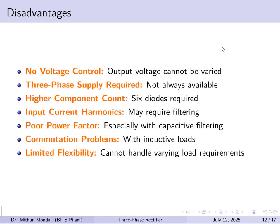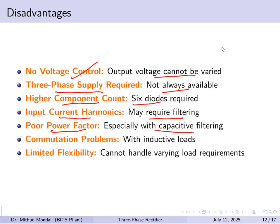Disadvantages include no voltage control, since the output voltage cannot be varied when using diodes; requirement for a three-phase supply, which is not always available; high component count with six diodes compared to fewer in half-wave configurations; input current harmonics requiring filtering; poor power factor especially with capacitive filtering; commutation problems with inductive loads; and limited flexibility in handling widely varying load requirements.